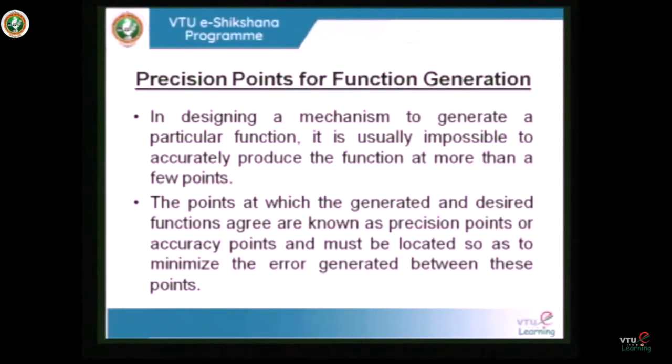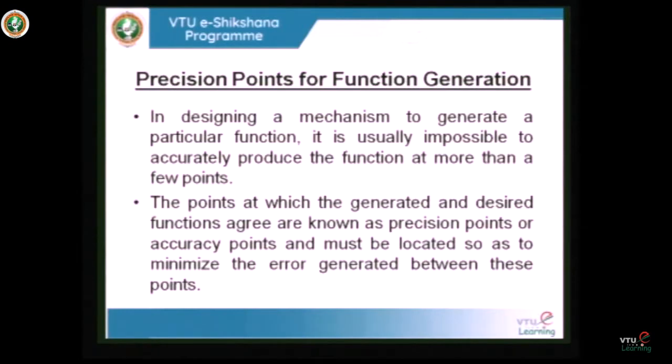In function generation, whatever function we generate will not completely trace all the points. It is usually very difficult to accurately produce the function for more than a few points — tracing all points is highly impossible. Only a few points can be generated accurately. The points at which the generated function agrees with the desired function are known as precision points or accurate points, and they must be located so as to minimize the error generated between these points.